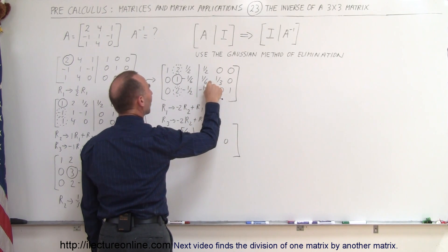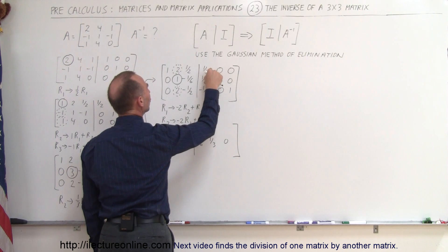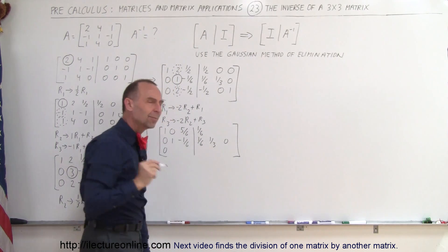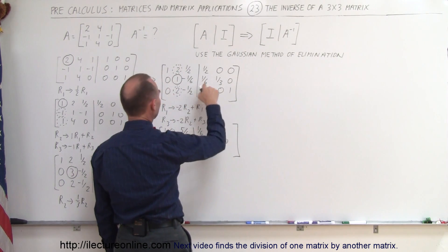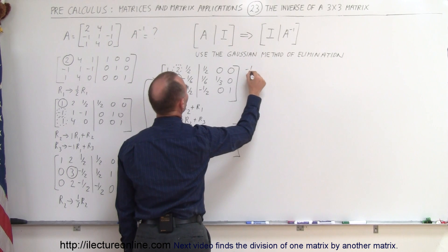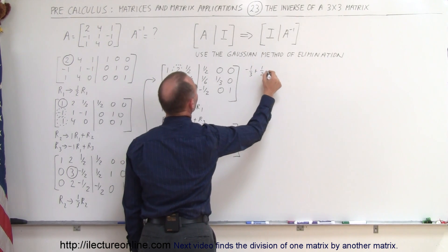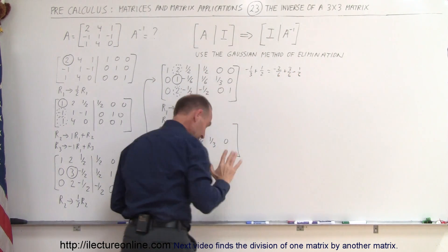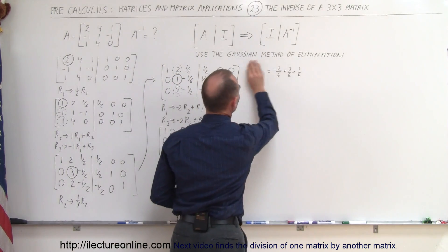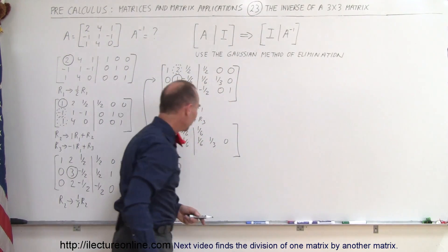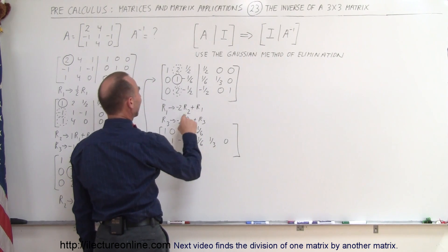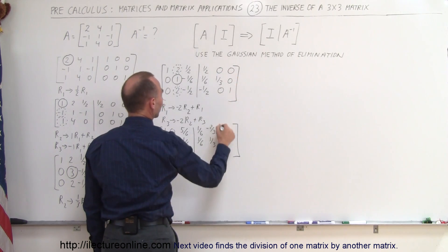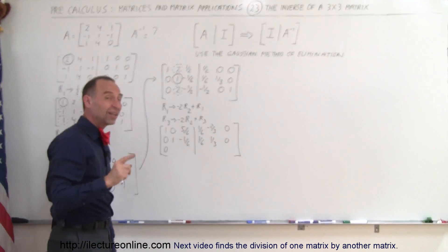Negative 2 times one sixth is negative one third, added to one half equals negative two sixths plus three sixths, which is one sixth. And negative 2 times one third is negative two thirds, added to that gives negative two thirds; that entry stays as 0. So we do the same for the third row: negative 2 times 1 added to 2 gives 0.